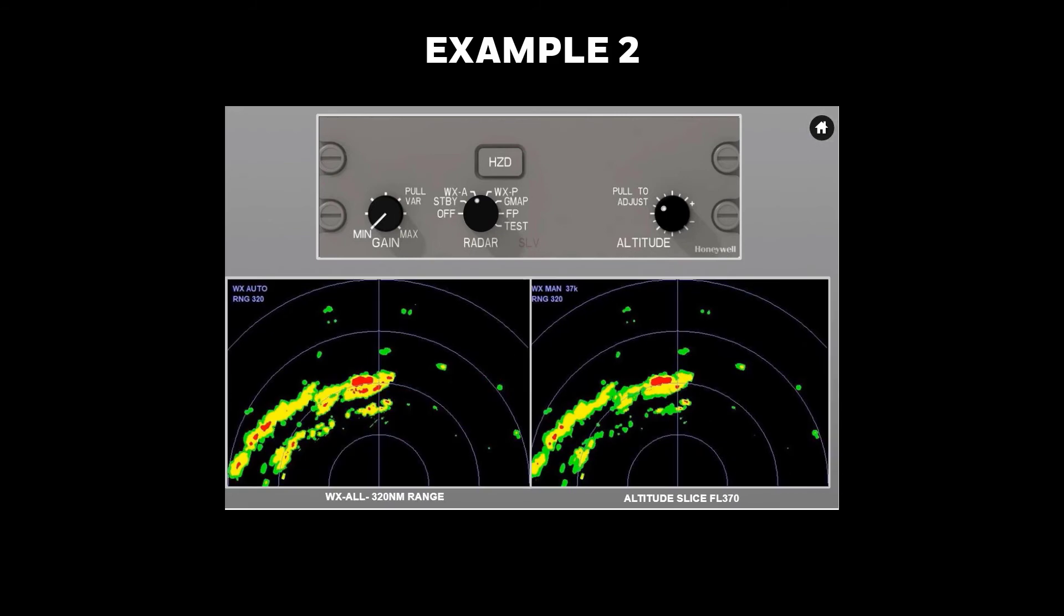Here is another example that illustrates how auto mode and altitude slices are used to analyze and avoid convective weather. It will emphasize the use of constant altitude slices to analyze a line of convection in order to find an avoidance path.